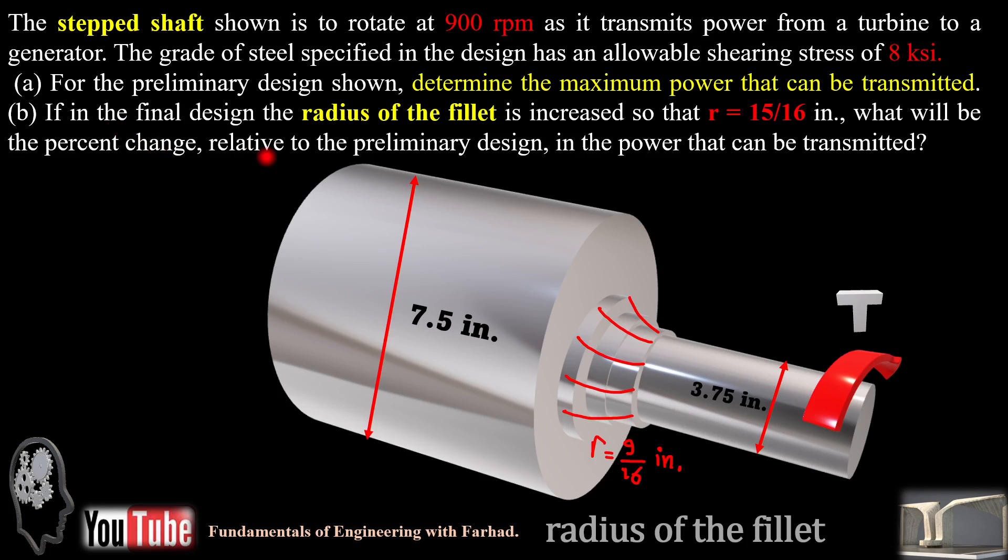In the next video, in part B, we want to increase the radius of fillet from 9 over 16 to 15 over 16 to see the effect of change in terms of increase or decrease of power produced.